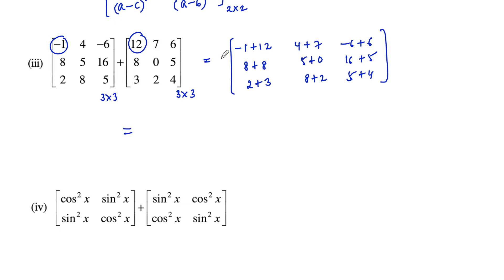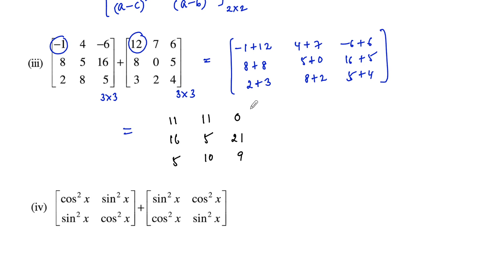So finally we get: negative 1 plus 12 is 11, 4 plus 7 is 11, minus 6 plus 6 is 0, 8 plus 8 is 16, 5 plus 0 is 5, 16 plus 5 is 21, 2 plus 3 is 5, 8 plus 2 is 10, and 5 plus 4 is 9. So which is again a 3 by 3 matrix. Coming to the fourth one.